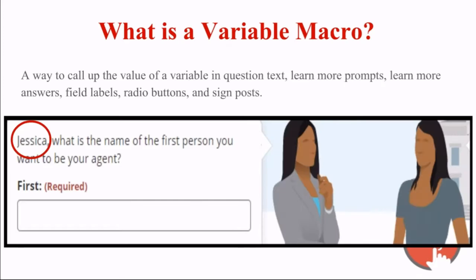To kick off, we'll start with variable macros. What is a variable macro? A variable macro is a way to call up the value of a variable in question text, learn more prompts, learn more answers, field labels, radio buttons, and signposts. It's a way for you as the author to personalize a guided interview, giving the end user back information that they've already told you. It really takes an interview up a notch from being a basic question-and-answer exchange to feeling more like an actual interaction between the end user and the guide avatar.